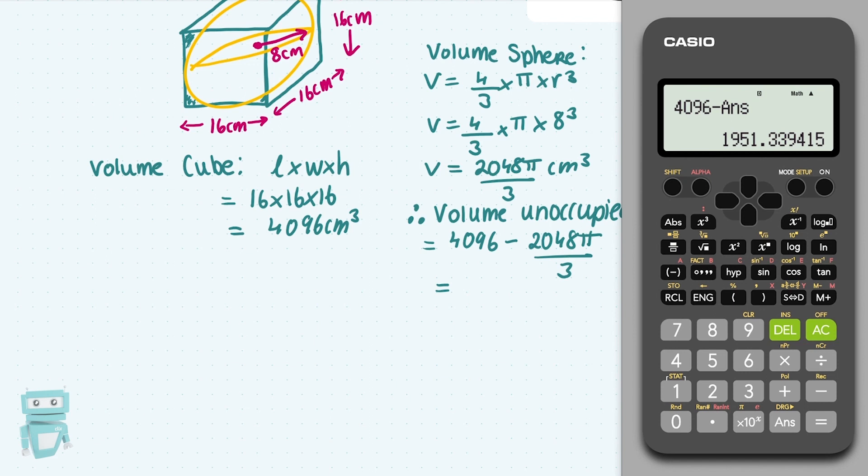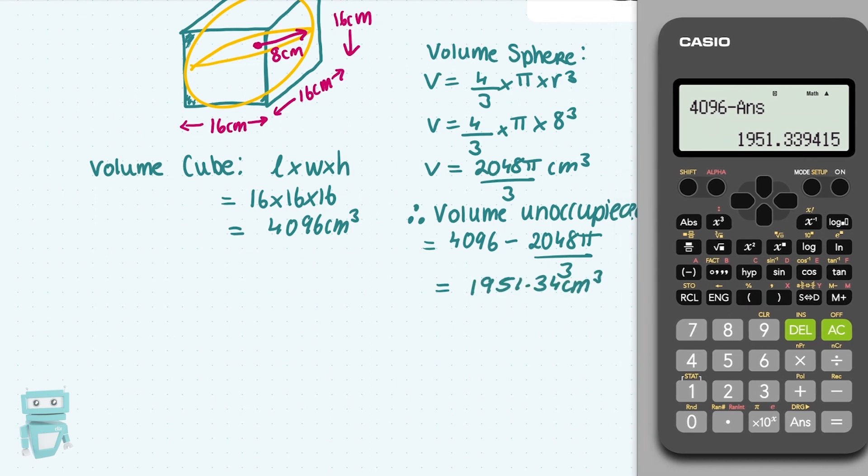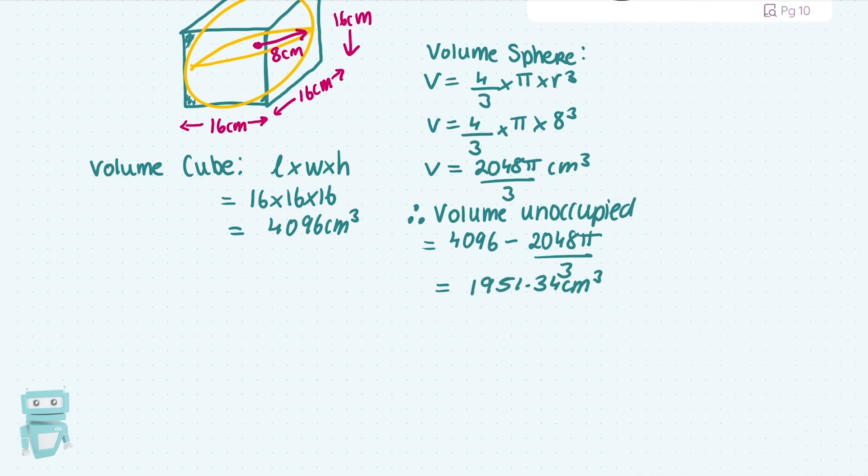Technically that's not what they've asked me here. They've asked me for the percentage unoccupied. So we'll work out the percentage. It'll be the amount of space, or the volume that was left over, over the total volume, which is 4096.